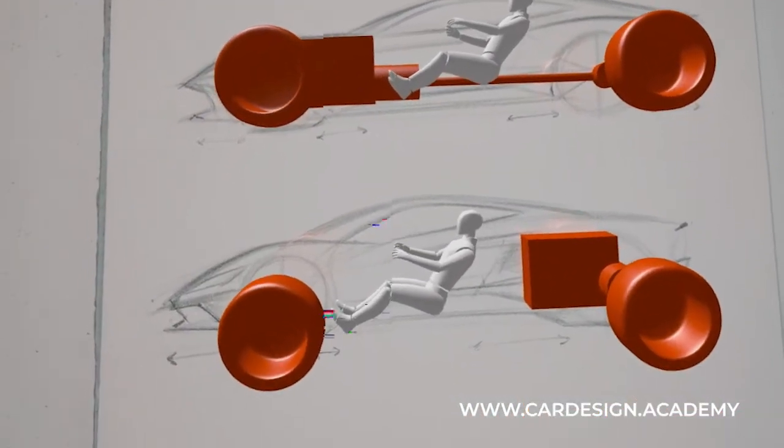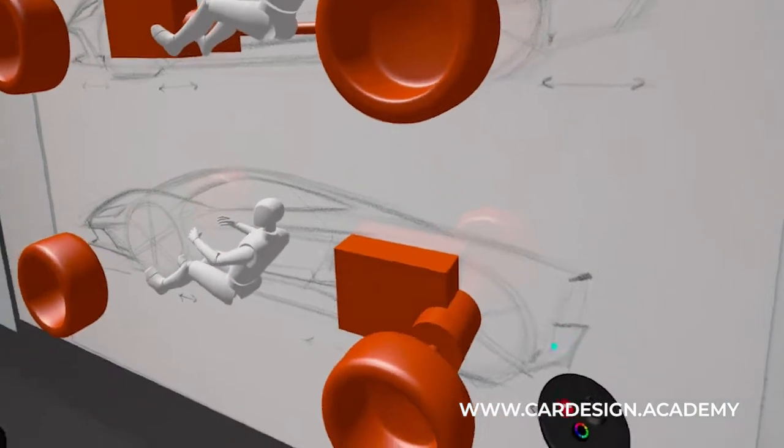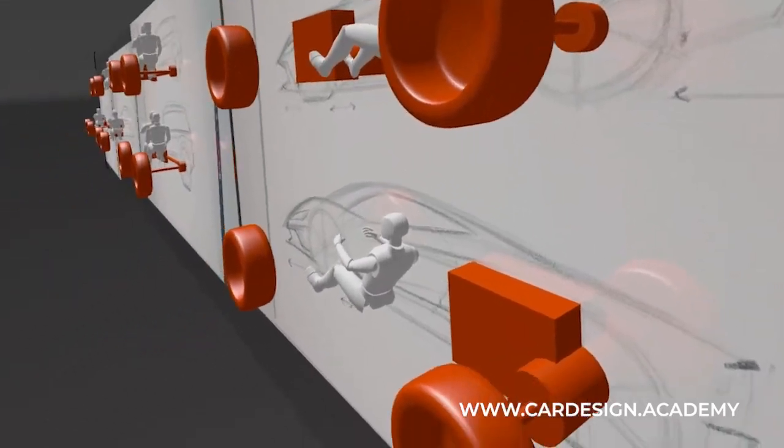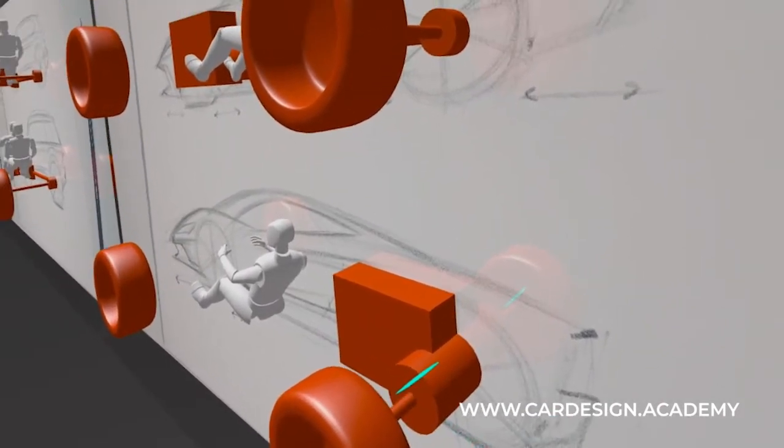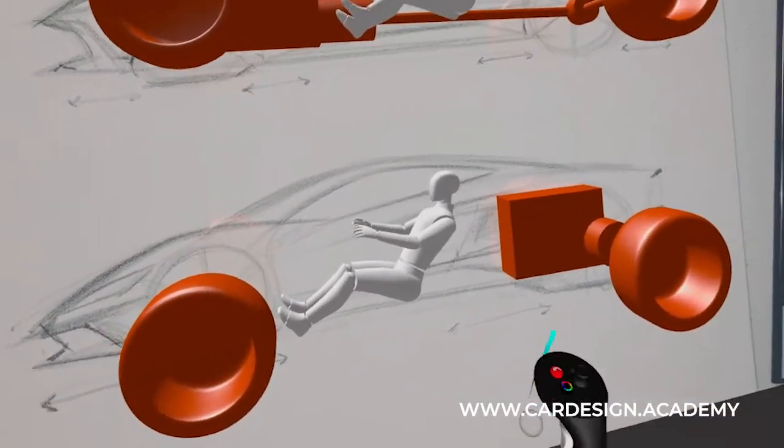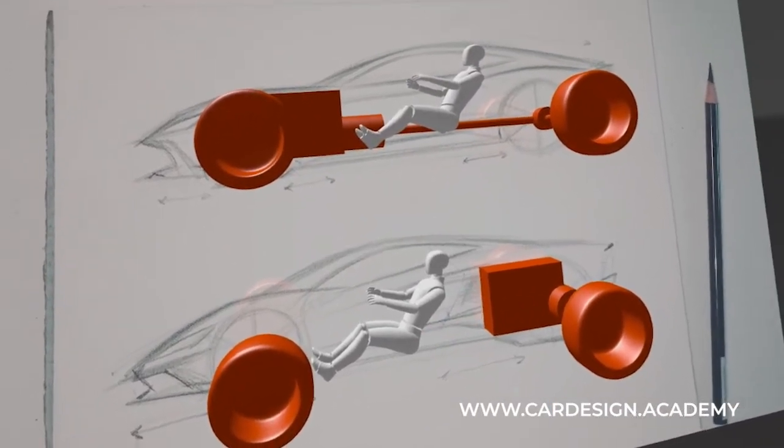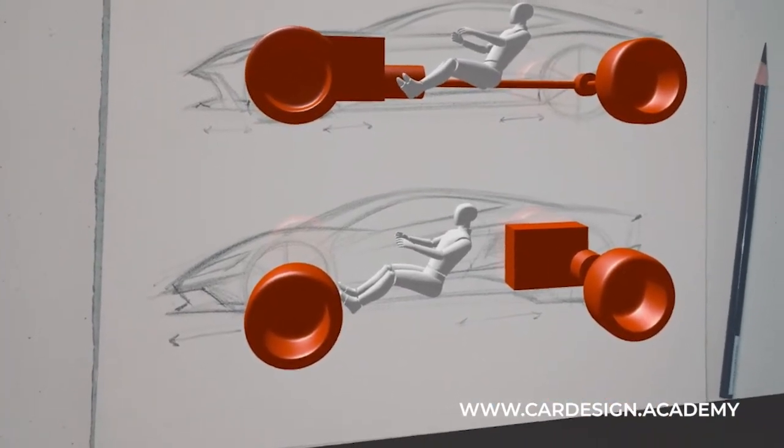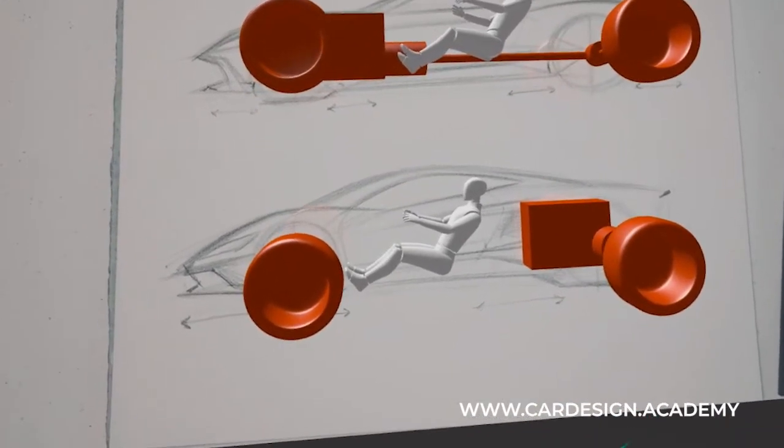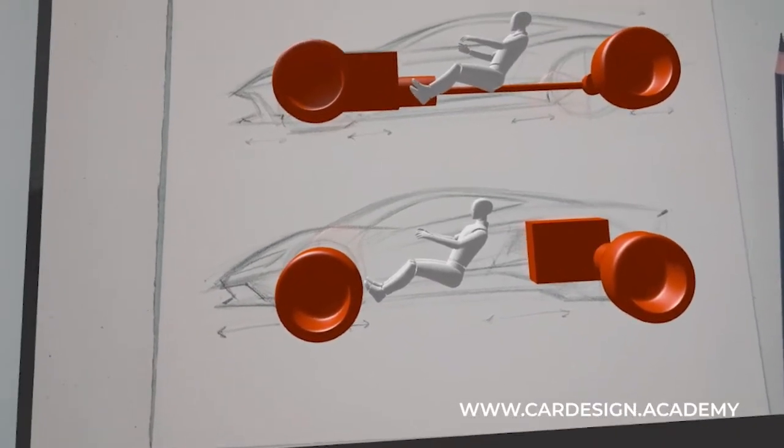And then with mid engine, the engine is again longitudinal. However, it's positioned behind the driver. Right off the back of the engine is a differential transmission or transaxle, which sends the power directly to the rear wheels. Sometimes they're all wheel drive as well, but for the most part, they're rear wheel drive. This tends to push the occupant way further forward. So in the case of like Corvette, when they went from the C seven configuration to the C eight configuration, I think the driver position moved forward about 200 millimeters or eight inches. It's a pretty significant change proportionally.